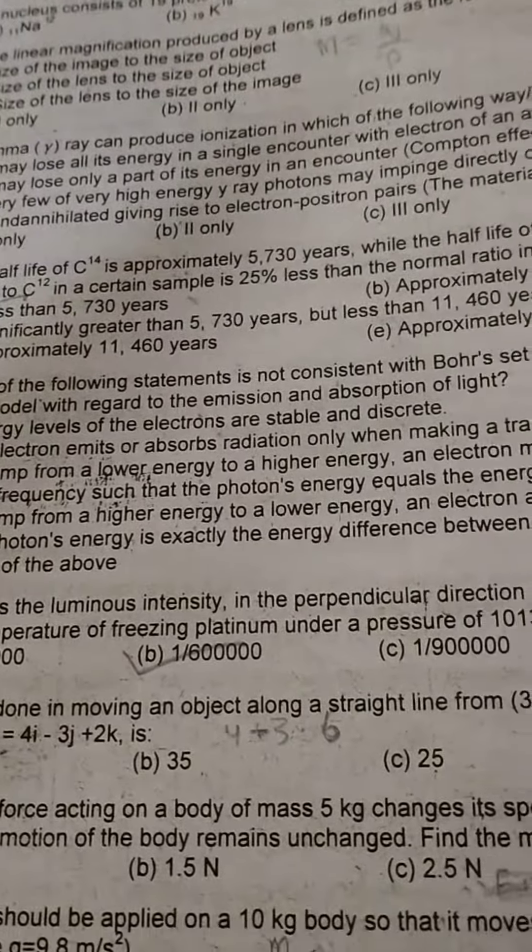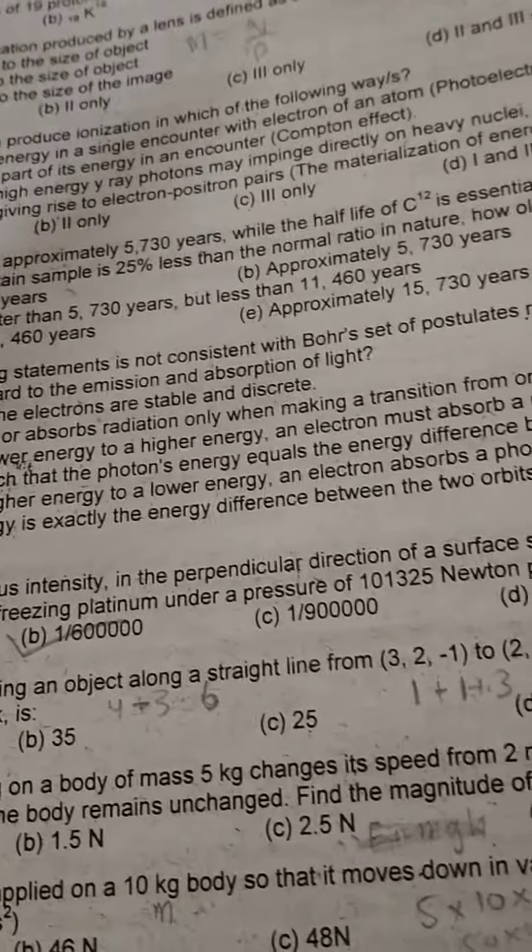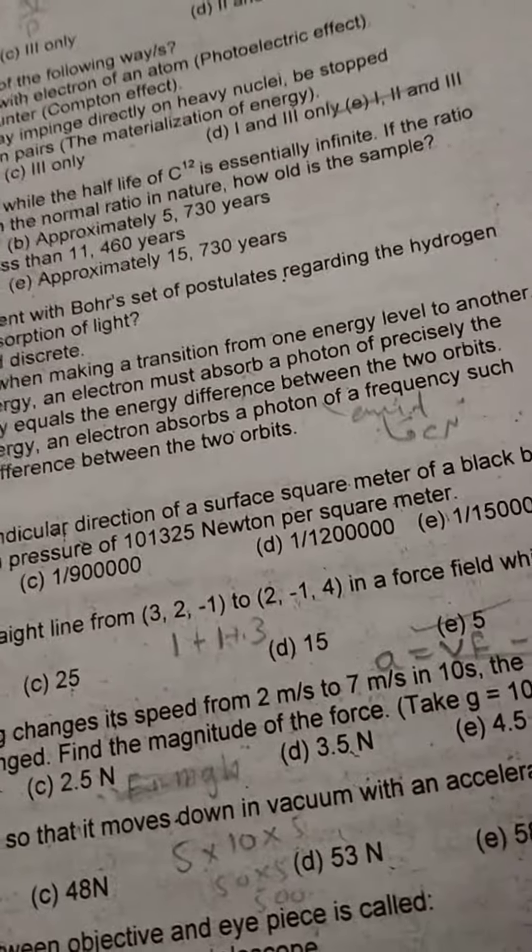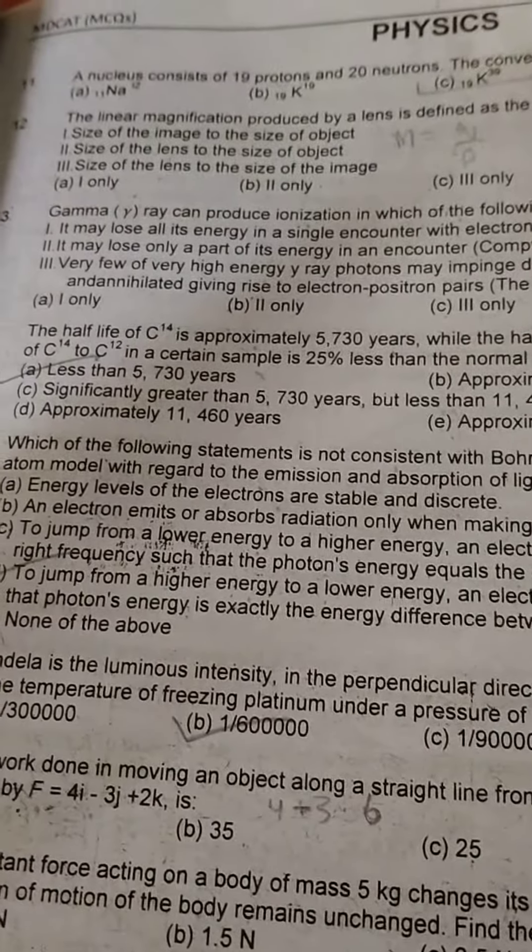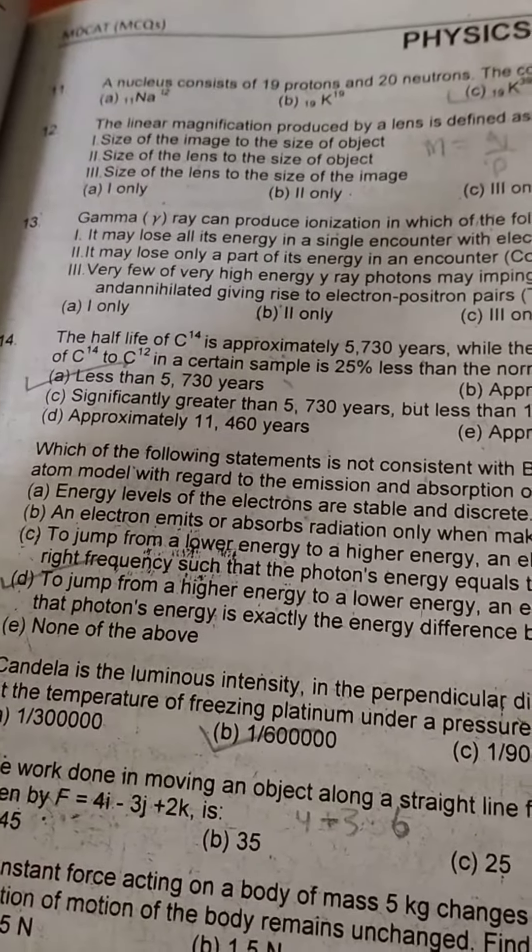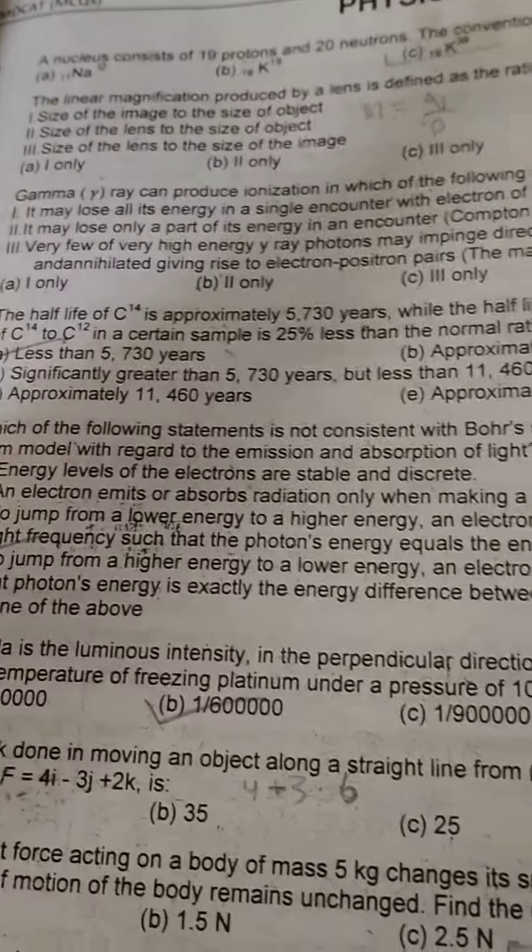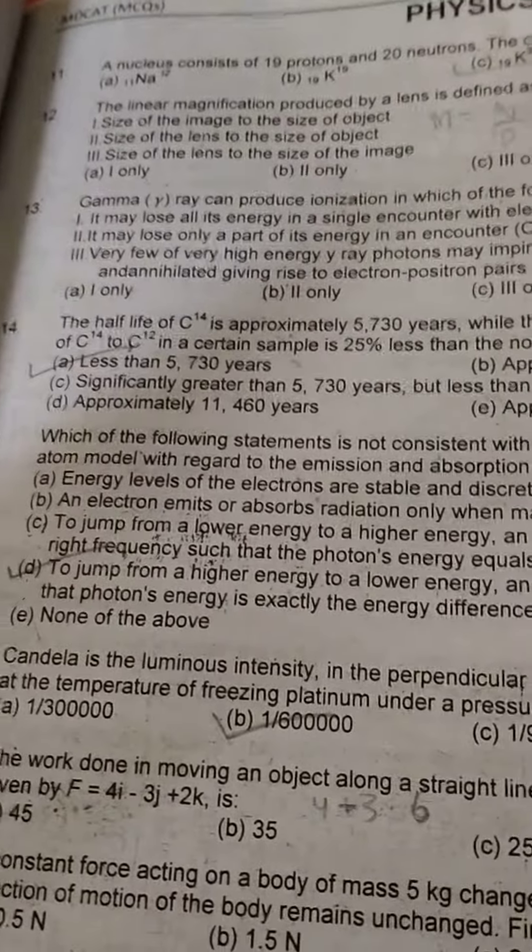Option B: An electron emits or absorbs radiation only when taking transition from one energy level to another. Look, these statements are correct. We are looking at the wrong statement.